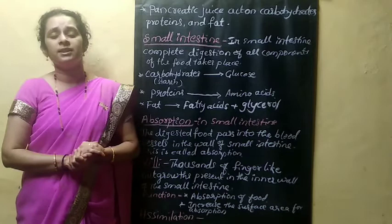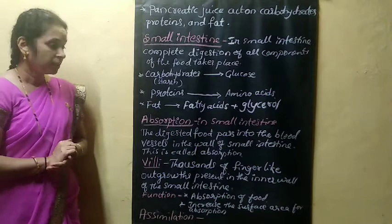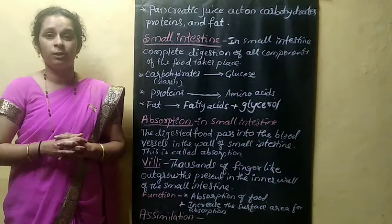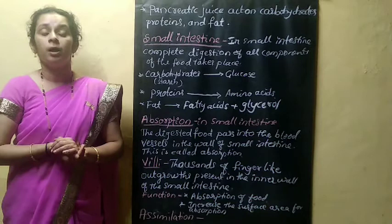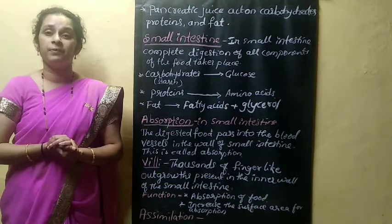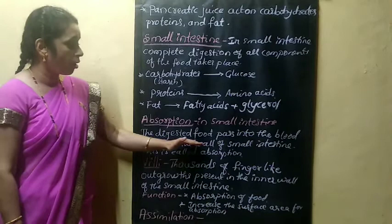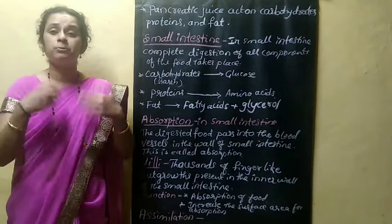The inner wall of the small intestine secretes intestinal juice. In the small intestine, a very important process called absorption takes place. The digested food passes into the blood vessels in the wall of the small intestine. This process is called absorption.